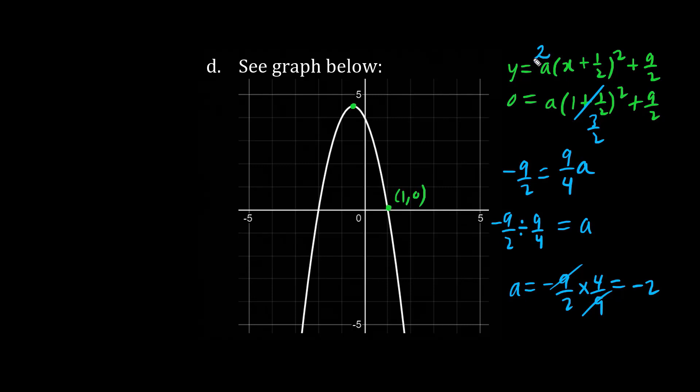So we found the equation. This is y equals negative 2. It's a sad face. X plus 1 half squared plus 4.5 or 9 over 2.